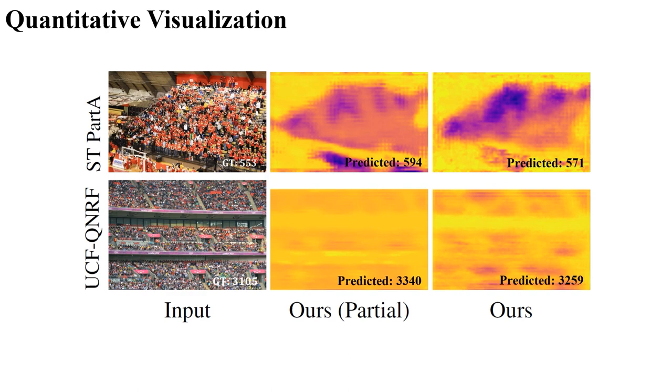We visualize the density maps delivered from the first layer of the network. Although there are no location points as supervisory signals, the estimation of our approach is close to the ground truth density maps.